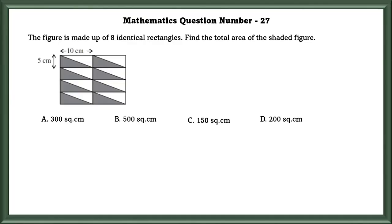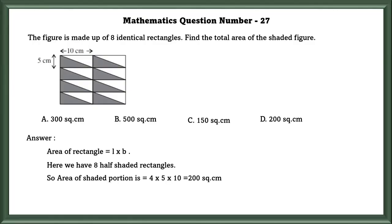Mathematics question number 27: The figure is made up of 8 identical rectangles. Find the total area of the shaded figure. Area of rectangle equals L × B. We have 8 half-shaded rectangles, which can be made into 4 full rectangles. So the area of the shaded portion equals 4 × 5 × 10, which equals 200 square centimeters.